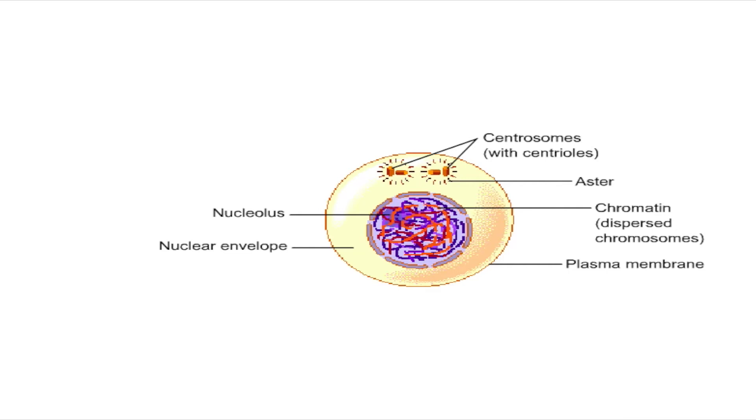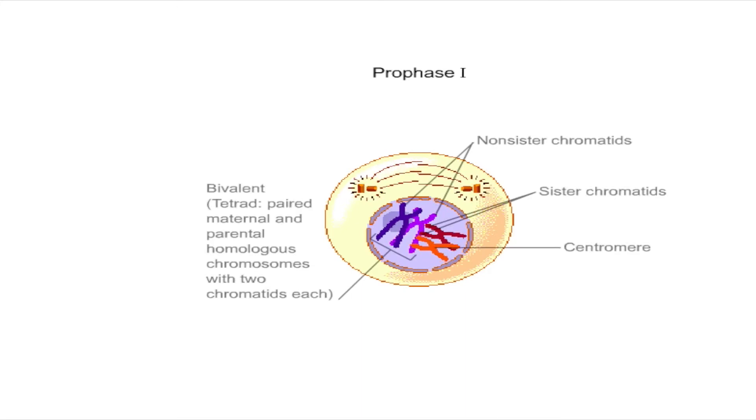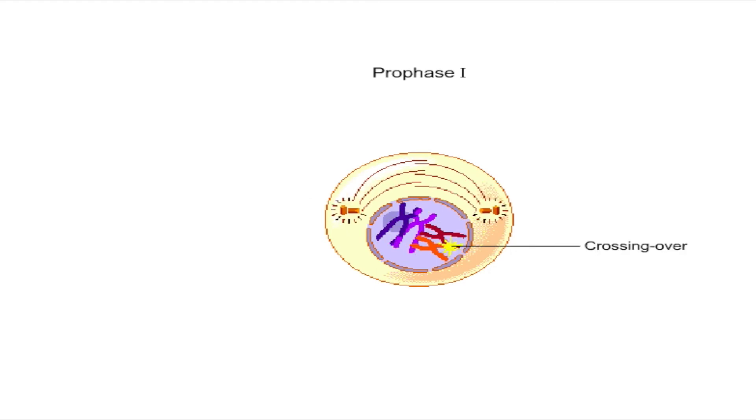The first phase of meiosis one is prophase one. During this phase, the already duplicated chromosomes begin to coil and homologous chromosomes align loosely. The alignment of the chromosomes leads to crossing over, the reciprocal exchange of DNA between homologous chromosomes.